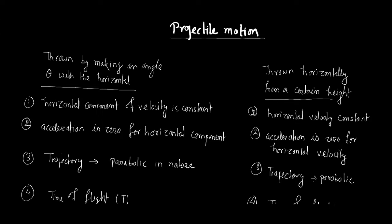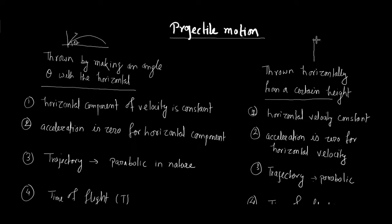We have made two categories of projectile motion. In one, a body is thrown by making a certain angle theta — that means projected at an angle. In another case, an object is thrown from a certain height in the horizontal direction, and the nature of its path is parabolic, but quite different from the first case.